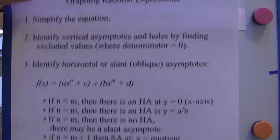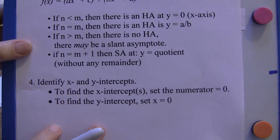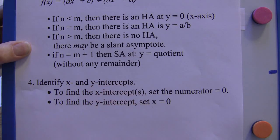And then the fourth thing you need to do when graphing rational expressions is to identify the x and y intercepts.